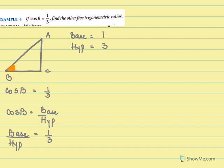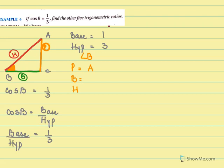So for the triangle at angle B, let me mark my base, hypotenuse, and perpendicular. My perpendicular will be AC — the side opposite. Here will be the base, and the hypotenuse will be AB. So for angle B, I will write down who is the perpendicular, which is the base, which is the hypotenuse. From the figure we see that the perpendicular of B is AC, the base is BC, and the hypotenuse is AB. Now we see the base is 1, so BC must be 1. And hypotenuse is 3, so AB is 3.